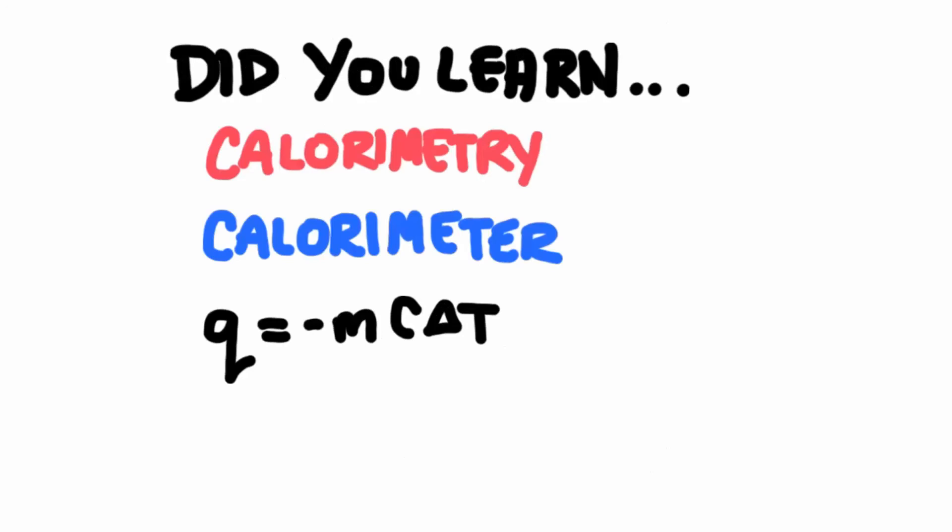To summarize what was covered in this lesson: calorimetry is the science of measuring heat; a calorimeter is a device used to measure heat during a chemical reaction; and you learned the equation to calculate heat — Q = m × C × ΔT.